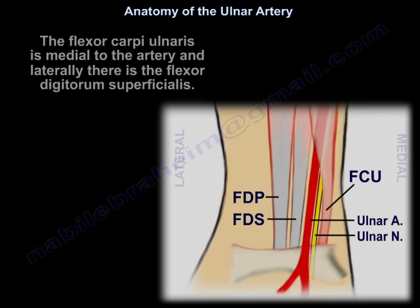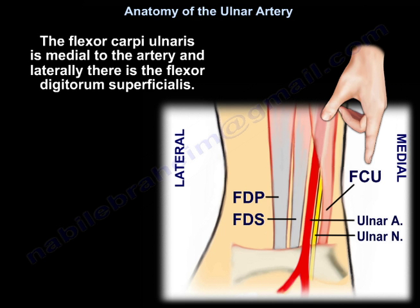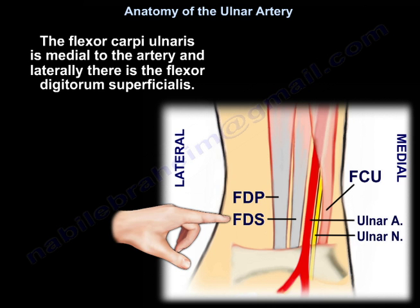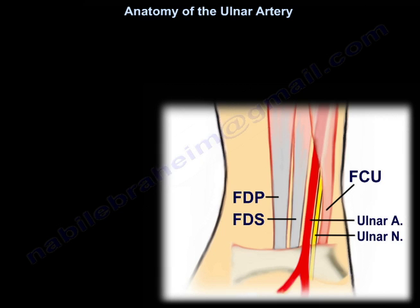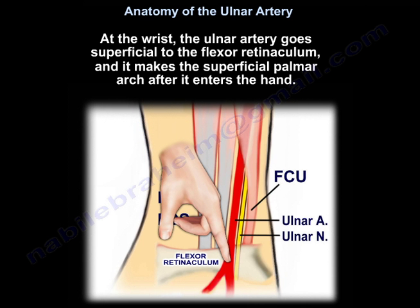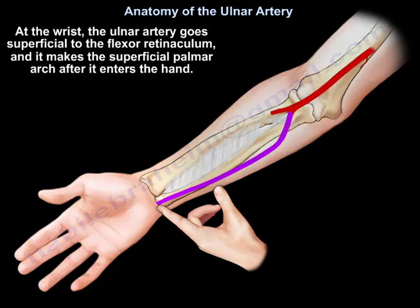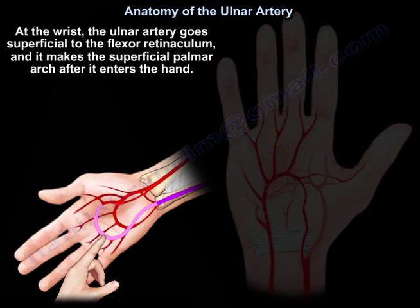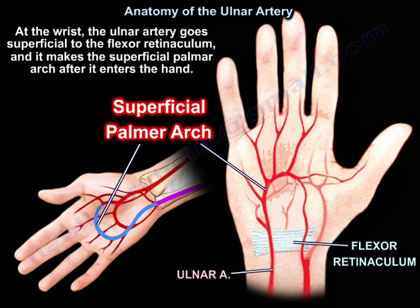The flexor carpi ulnaris is medial to the artery, and laterally you find the flexor digitorum superficialis. The ulnar artery goes superficial to the flexor retinaculum and makes the superficial palmar arch after it enters the hand.